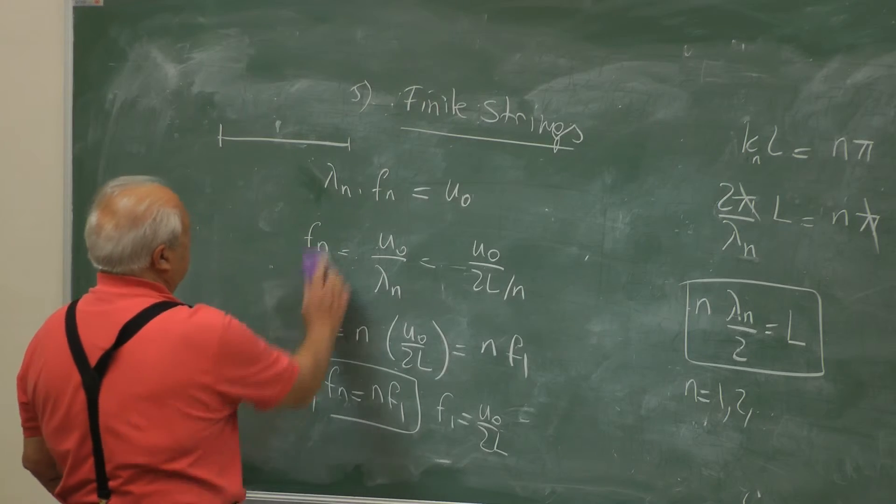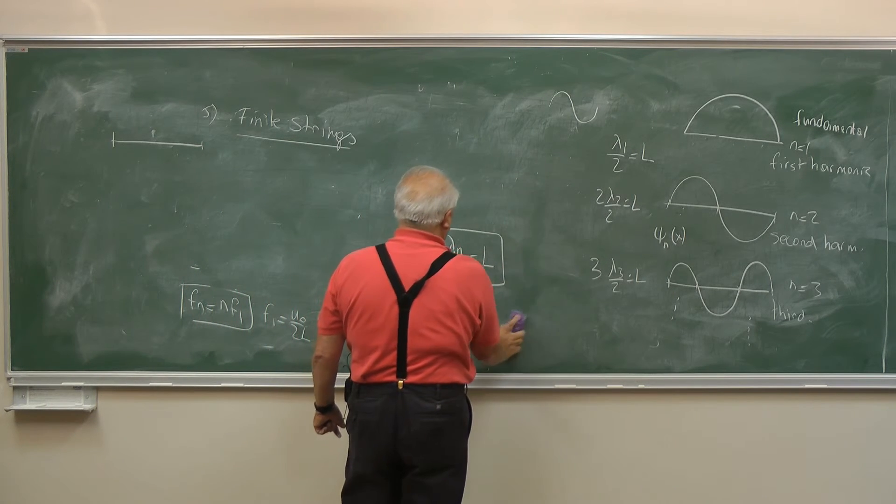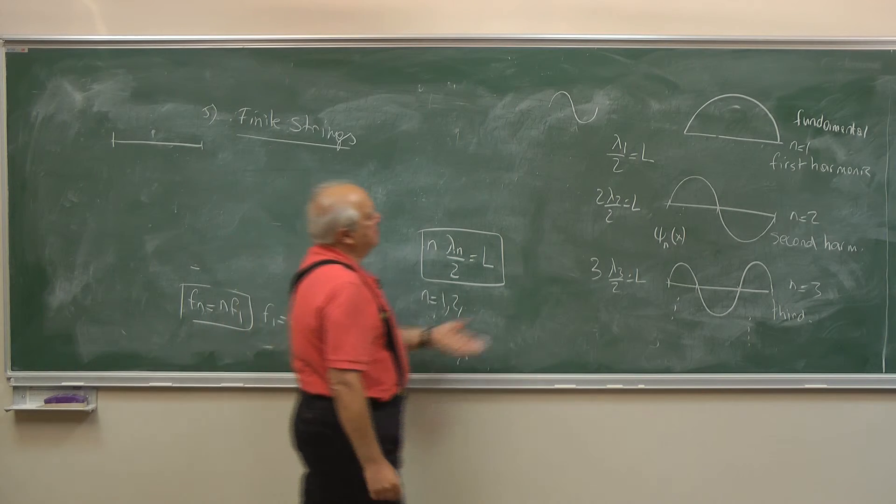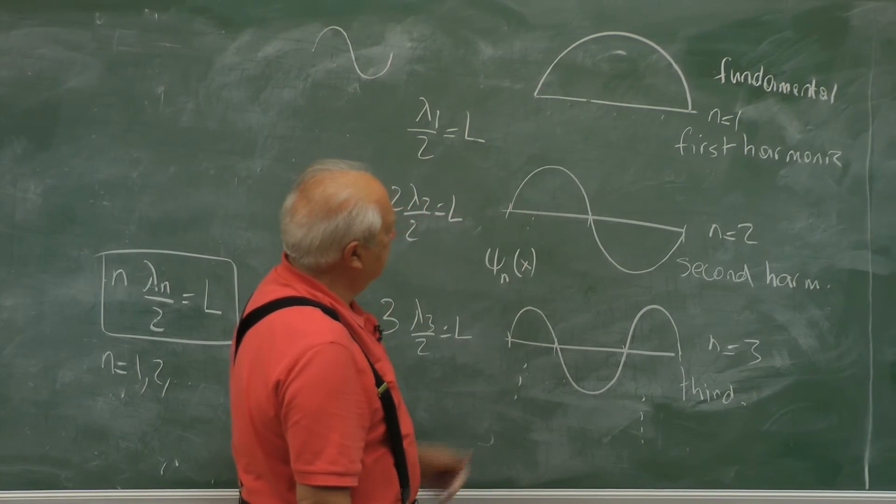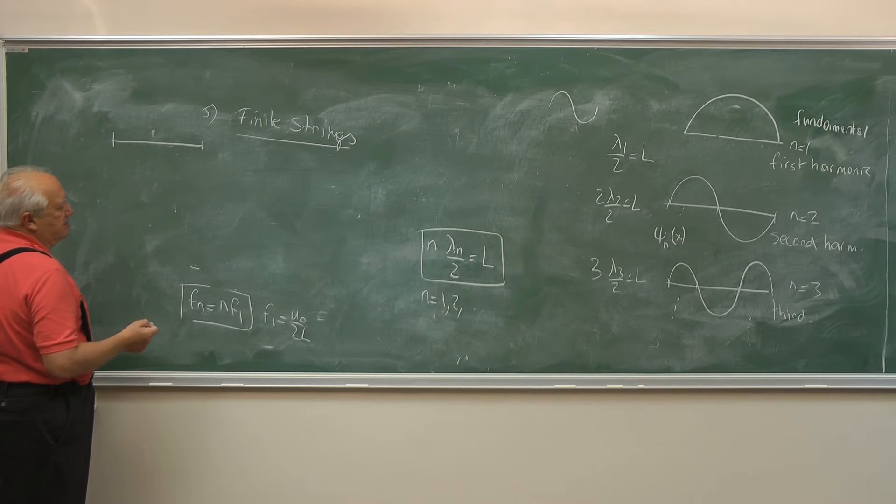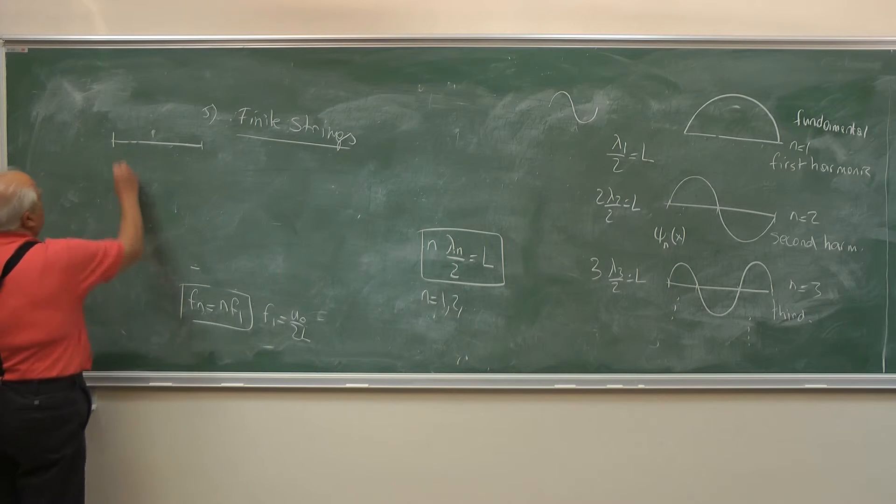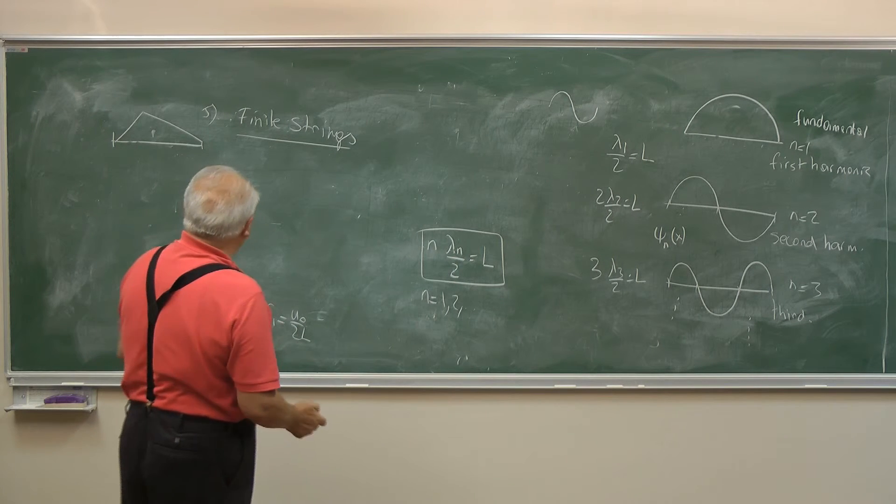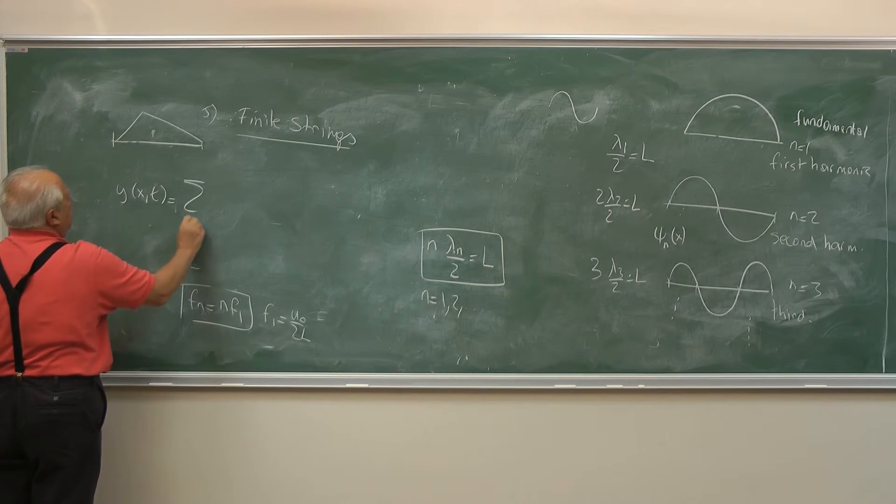Now let me erase some things here. You can erase all this. Now the point is, suppose you have a string like this. There is no way you can pluck it in this form, you know, perfect sinusoidal. What happens is that a guitar, take guitar for example. A guitarist plucks the string and plays. So since the initial displacement you give, for example you may pull it with your finger and then let go, this doesn't match any of the pure modes.